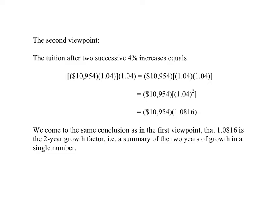So we carried out the first viewpoint. Now, what's the second viewpoint? We can say that the tuition after two successive 4% increases equals the original amount times 1.04, in parentheses here, times another copy of 1.04. So whatever's inside these parentheses here equals the tuition after one growth has occurred. And then that number, however much it turns out to be, is multiplied by another copy of 1.04 to reflect the second year's growth.